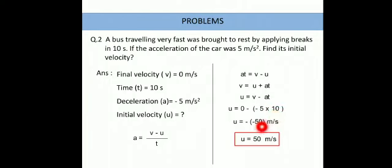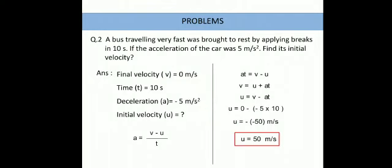So the bus was initially travelling at 50 meter per second when the driver applied the brake. It then took 10 seconds to stop the bus, with a deceleration of minus 5 meter per second squared. To summarize: if initial velocity u is 0, speed is increasing — that is acceleration. If final velocity v is 0, the speed is decreasing — that is deceleration, where u is greater than v. Thank you very much. Any doubt, you can call me anytime. That's all for today's class.